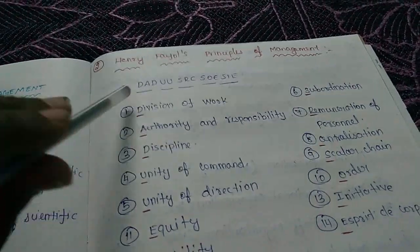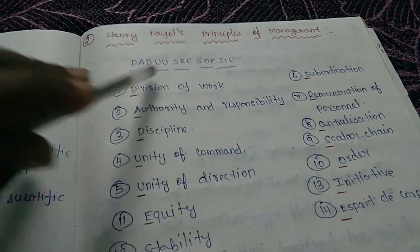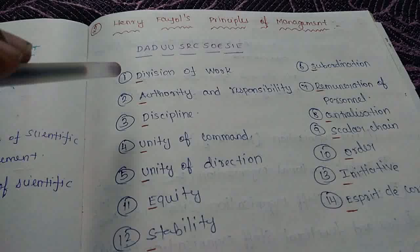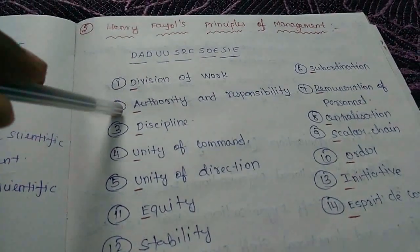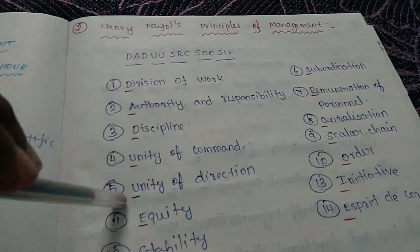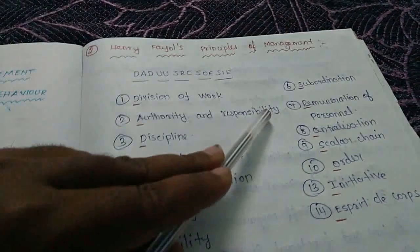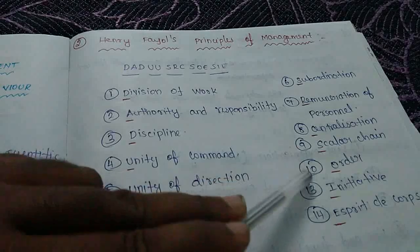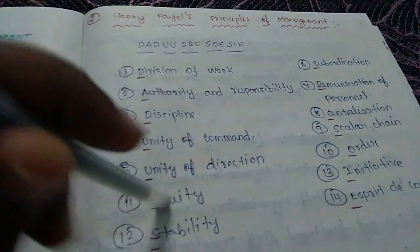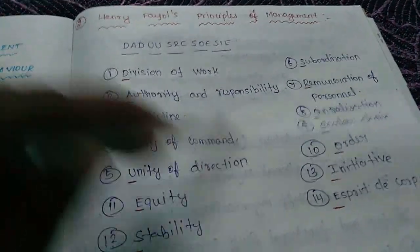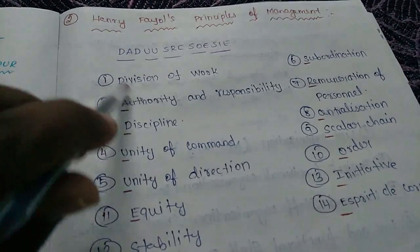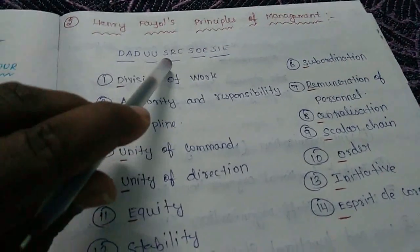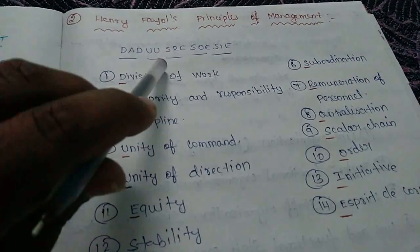Henry Fayol Principles of Management — the mnemonic is Dad UUSRC SOE SAE. First D is Division of Work, A is Authority and Responsibility, D is Discipline, U is Unity of Command, U is Unity of Direction, S is Subordination, R is Remuneration of Personnel, C is Centralization, S is Scalar Chain, O is Order, E is Equity, S is Stability, A is Initiative, E is Esprit de Corps.